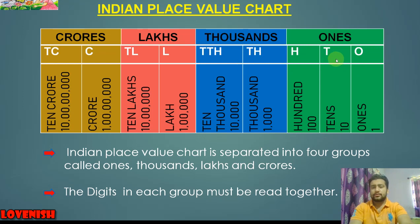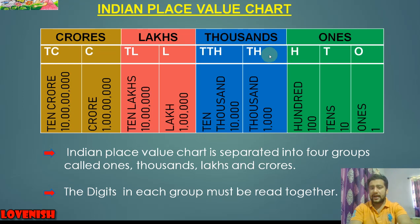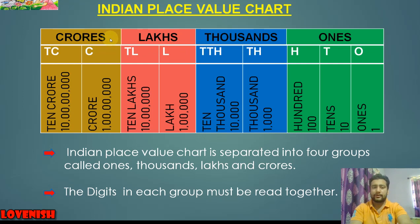In each group there are a few places. In the ones group there are three places: ones, tens, and hundreds. In the group of thousands there are two places: thousands and ten thousands. In the group of lakhs there are two places: lakh and ten lakh. After that, in the group of crores there are two places: crore and ten crore.